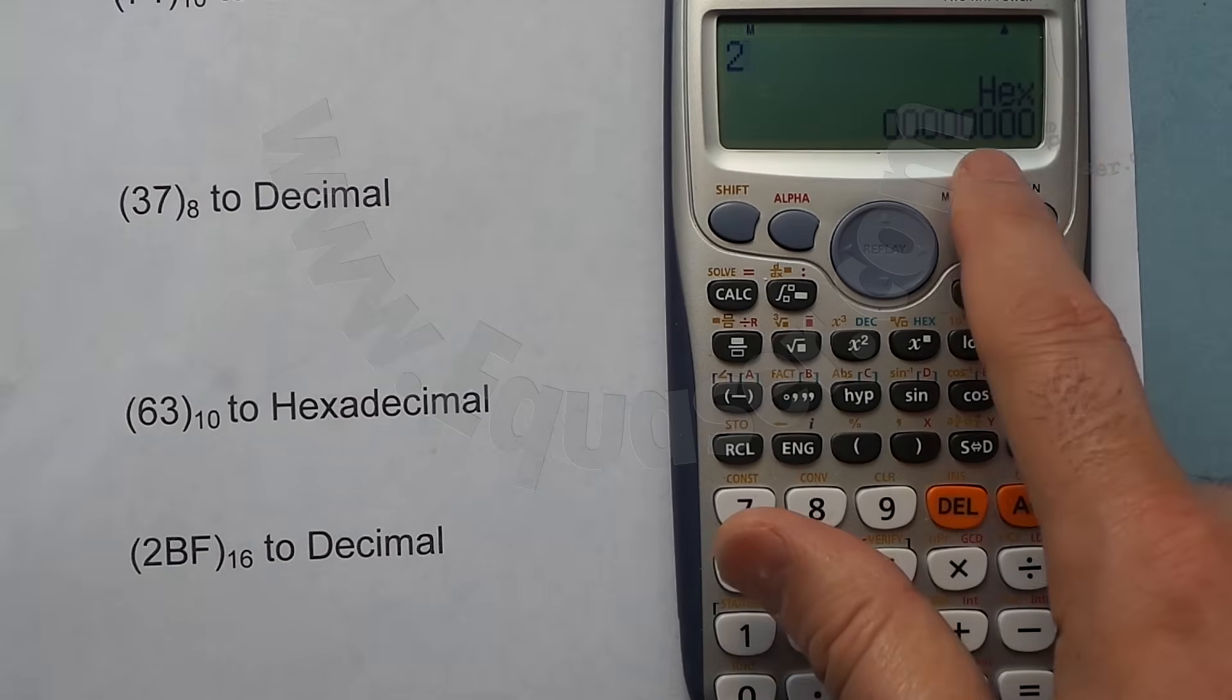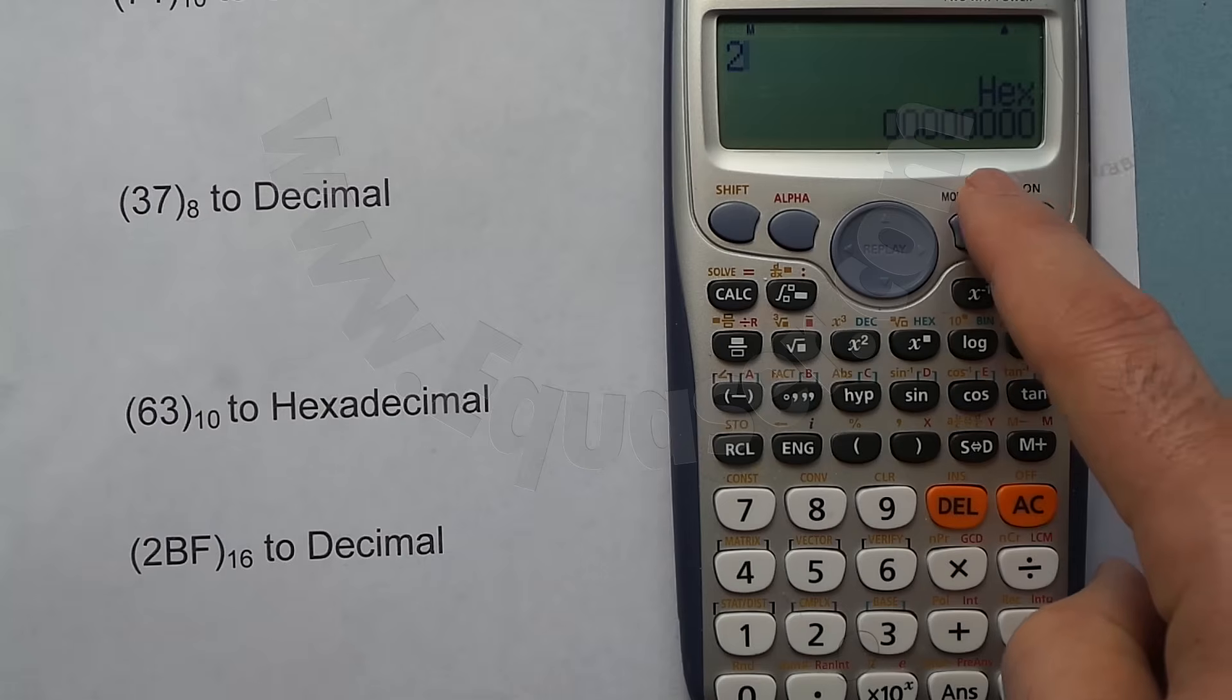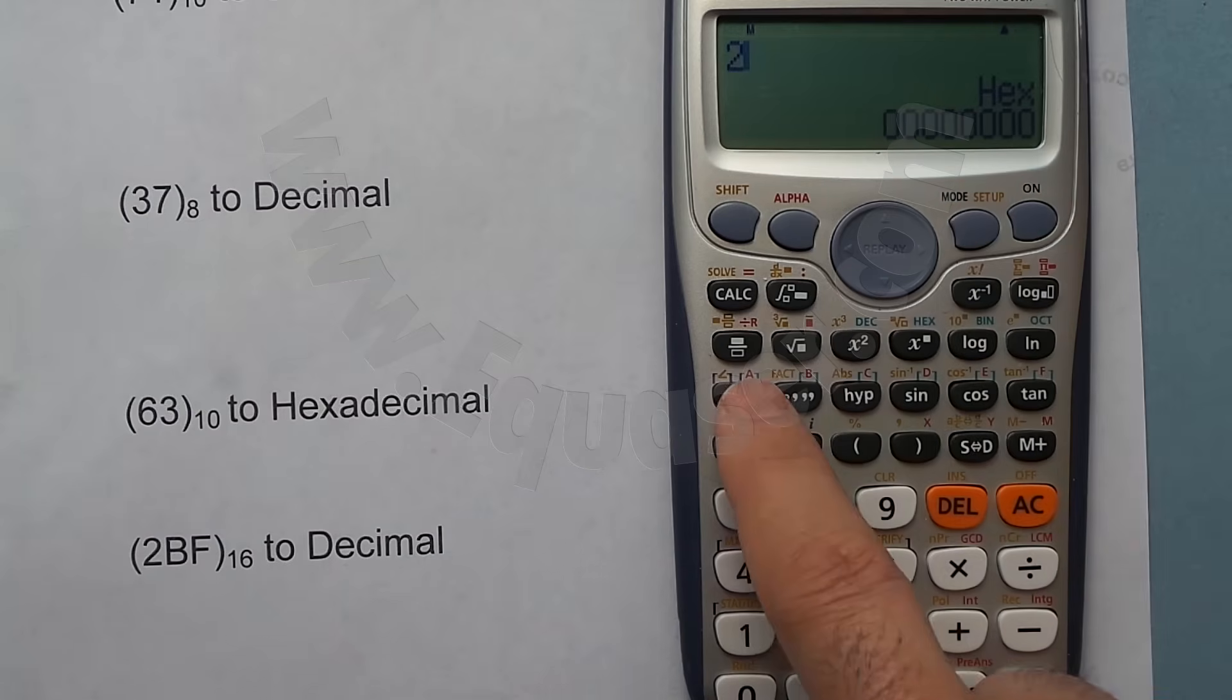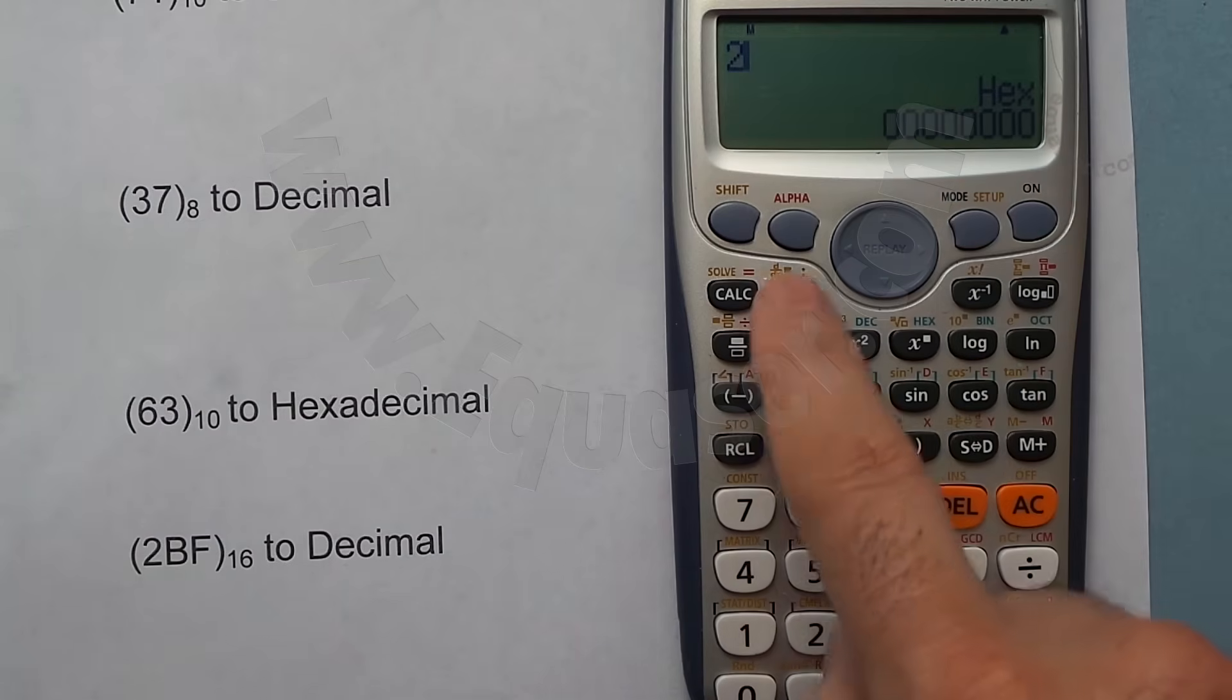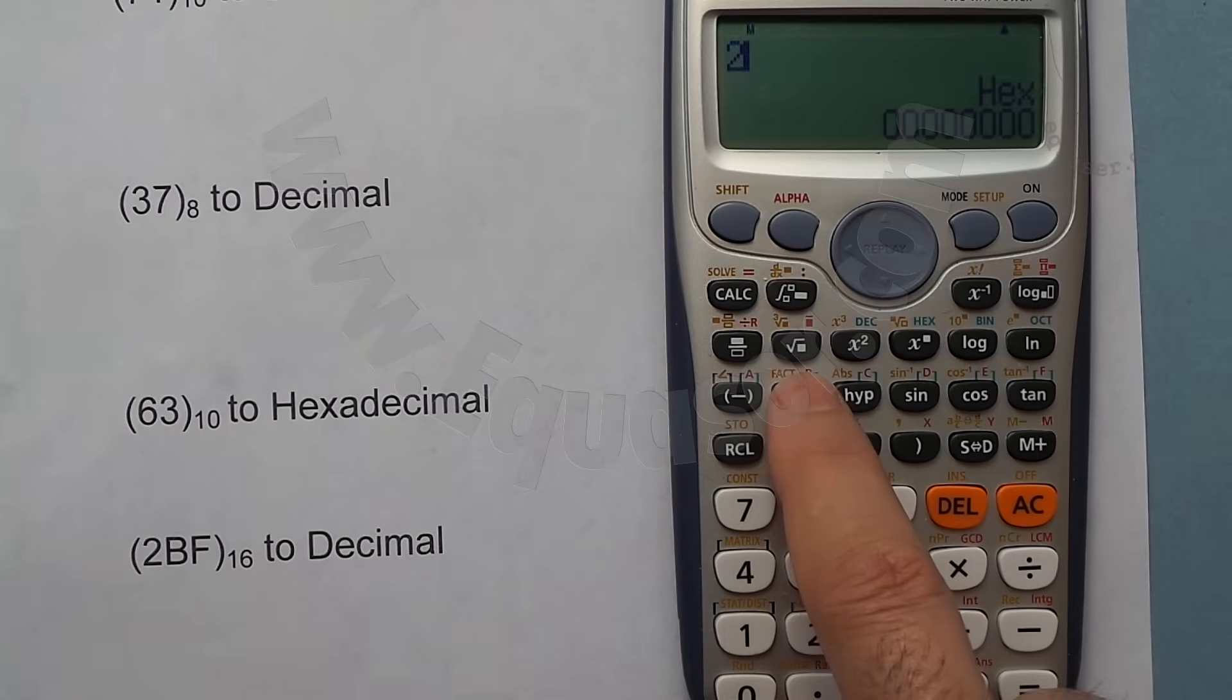When we are in base mode—binary, hex, octal, and decimal—automatically these buttons are activated and we don't need to press any shift or other buttons. So 2, I press this B, B.